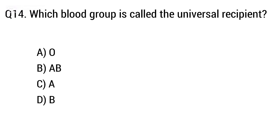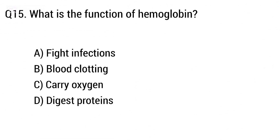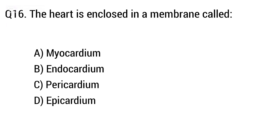Question 14: Which blood group is called the universal recipient? Option A: O, B: A, C: B, D: AB. The right answer is option D, AB. Question 15: What is the function of hemoglobin? Option A: fight infection, B: blood clotting, C: carry oxygen, D: digest protein. The right answer is option C, carry oxygen.